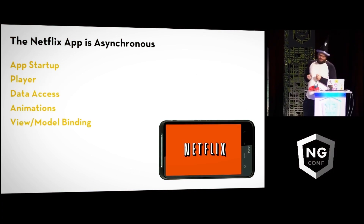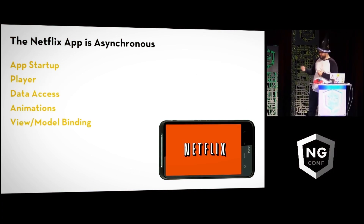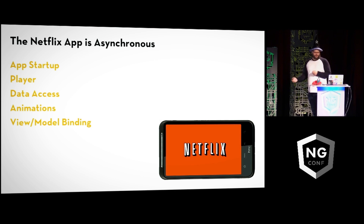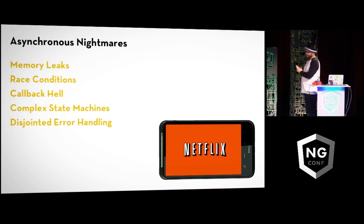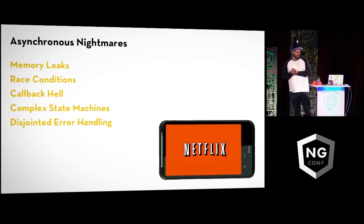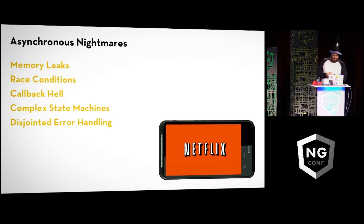Everything about your apps today is asynchronous — whether it's your startup, your player, your data access, your animations, view model bindings — everything about your app happens to be reactive. What comes with that is a number of nightmares you have to deal with: memory leaks, forgetting to get rid of event handlers, leaving a few open, and race conditions between certain events that are happening.